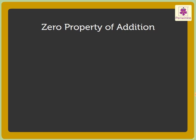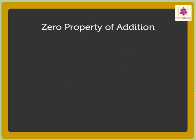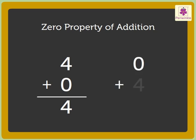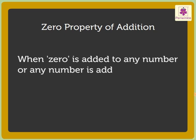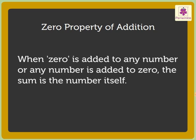Let us take the numbers 4 and 0. If we add 4 to 0, we get the sum 4. And even if we add 0 to 4, we get the sum 4. This tells us that when 0 is added to any number, or any number is added to 0, the sum is the number itself.